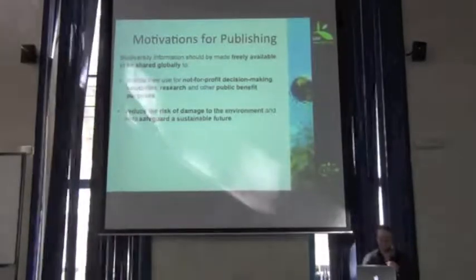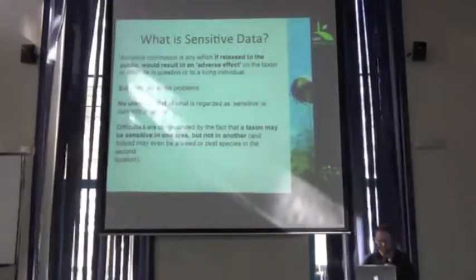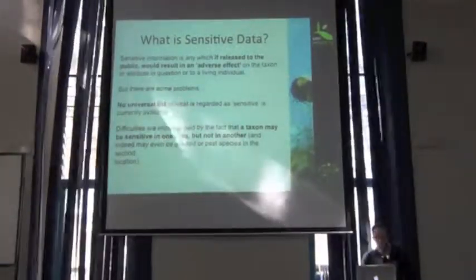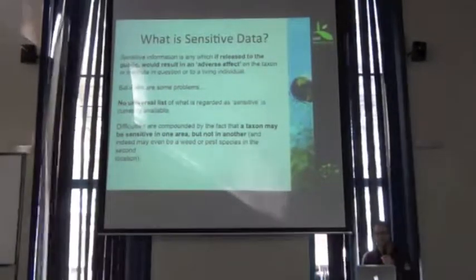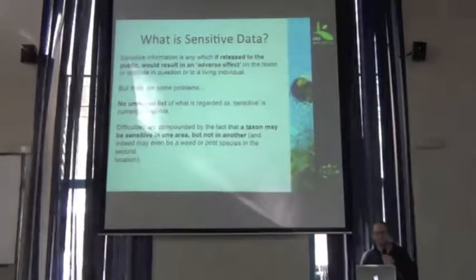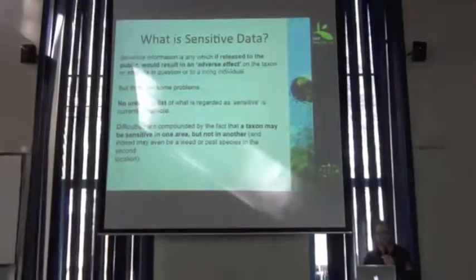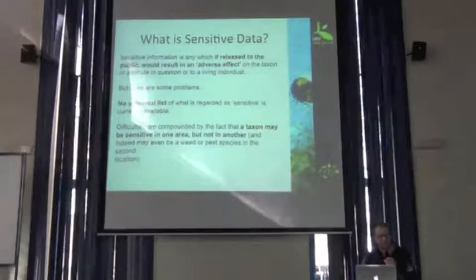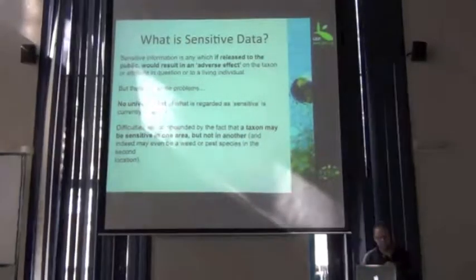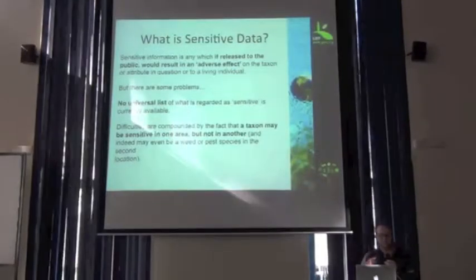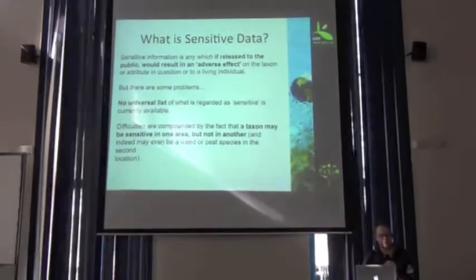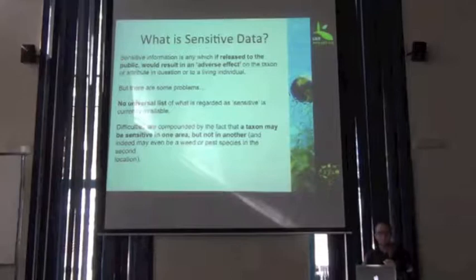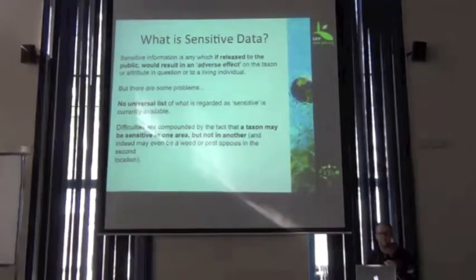That's why we're all here, right? Coming back to the definition of what is sensitive data — why are we addressing this? It prevents a lot of people from publishing their data who think it's sensitive. Sensitive data is that which, if released, could result in an adverse effect on what it is that you have in your data — an adverse effect on the taxon, on the rhinoceros, or on the elephant that you have in your data.